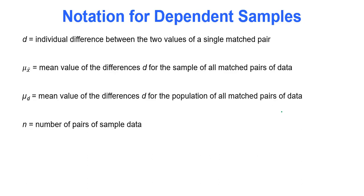The notation for dependent samples is as follows. d represents the individual difference between the two values of a single matched pair. We'll take data from one sample and from another sample, pair up a data value from sample one with a data value from sample two, and subtract to find the difference.